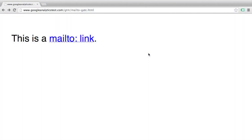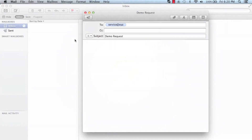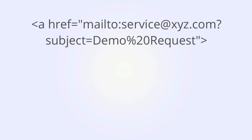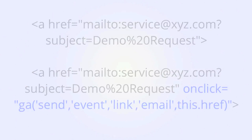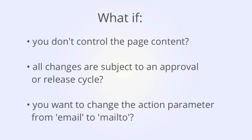Let's look at a mail to link as an example. When we click this link, it's going to open the mail client, but it is not going to force an additional page view, so no Google Analytics data will be recorded. Here's how the mail to link looks before any event tracking is added, and here's the link with event tracking added. The code for event tracking itself is very simple, but here's the potential problem. What if you don't directly control changes to page content? What if every change that you want to make is subject to an approval or a release cycle that could take weeks or even months? And what if at some point you want to change the action parameter of the event from email to mail to, and you have to go through the same hassle again?